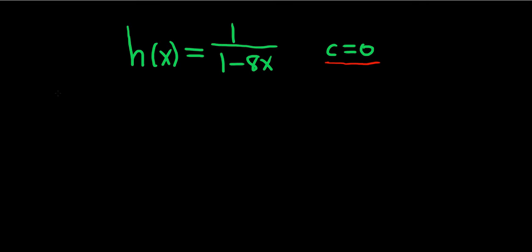So the formula we're going to use in this problem is the following. If we have 1 over 1 minus x, this is equal to the infinite sum as n runs from zero to infinity of x to the n. And this is true if the absolute value of x is less than one.